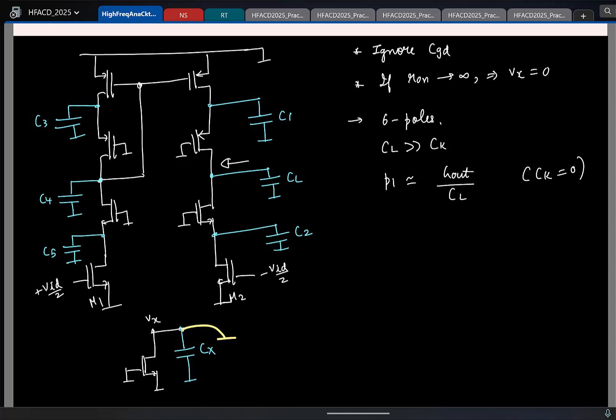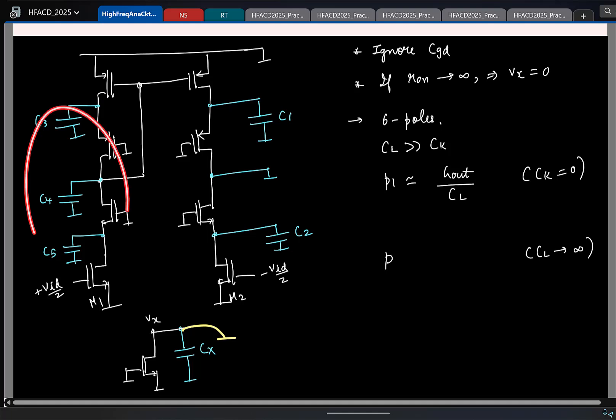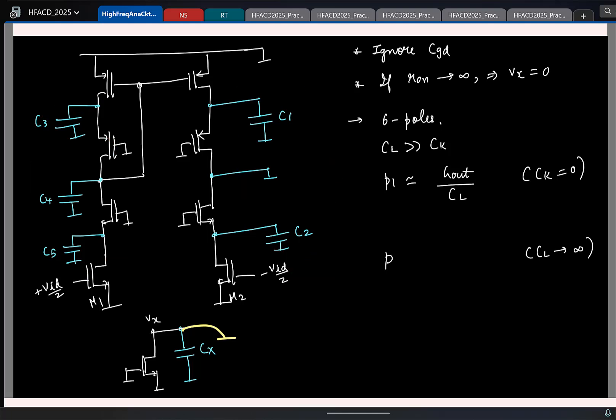Now let us try to find the other pole locations and for finding the other high frequency poles, what can I assume for CL? CL can be safely assumed to be short. So this is now short. For finding the other poles, I will again nicely assume that CL is short. So now you see I have a fifth order system. I have 5 capacitors. I do not know the relative values of the capacitors also.